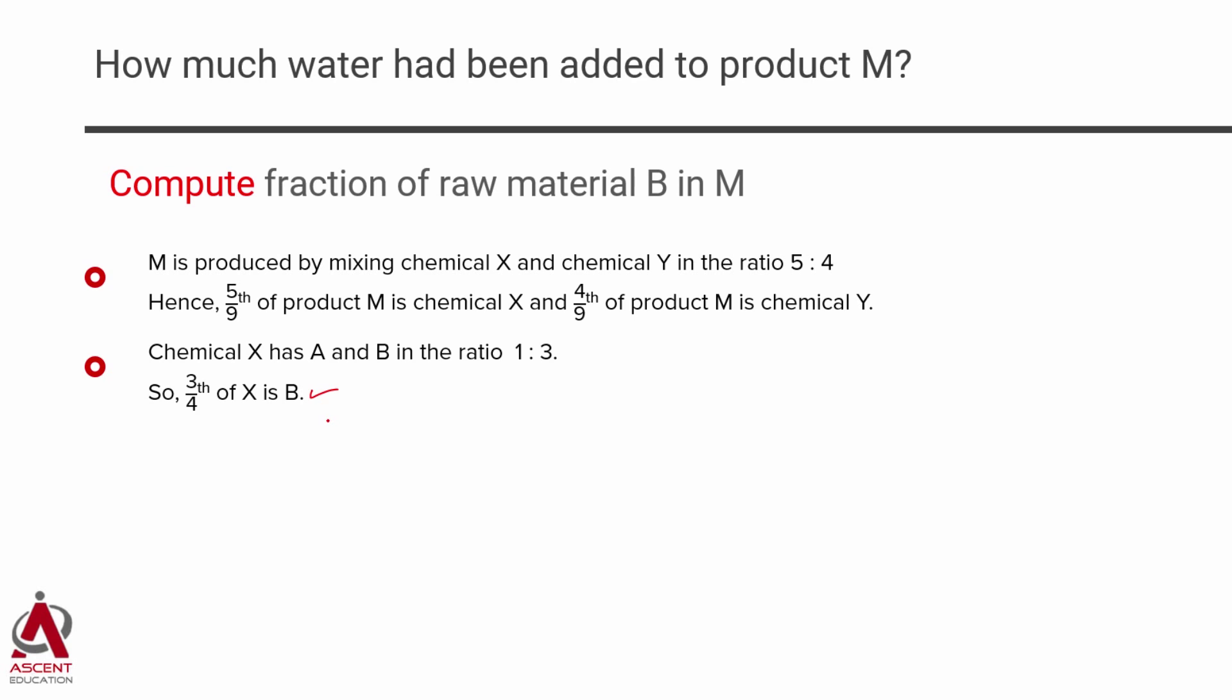So, how much will M comprise of B from X? It's basically going to be the combination of these two. 5 ninths of M is actually X. 3 fourths of X is B. Therefore, the fraction of B in product M from chemical X is going to be 5 by 9 into 3 by 4. So, we have found out one part of the story.